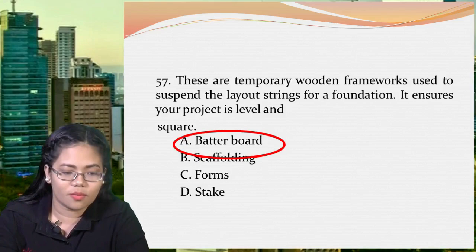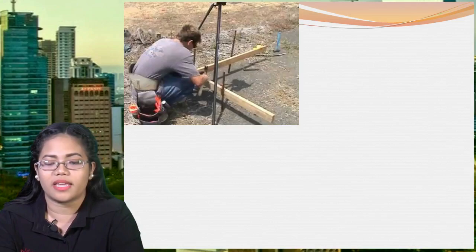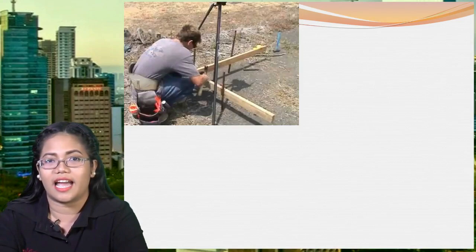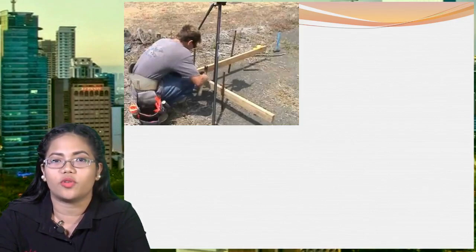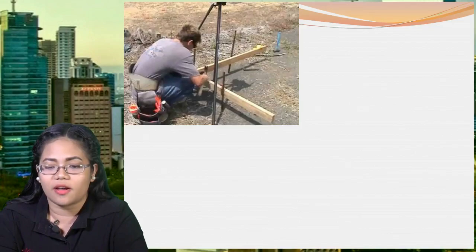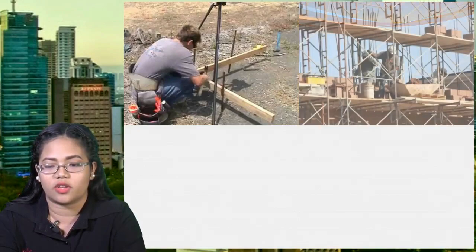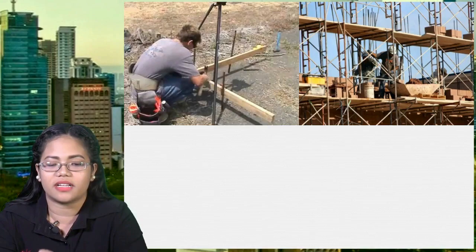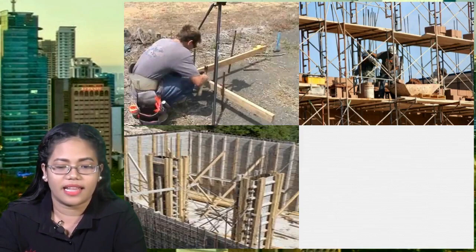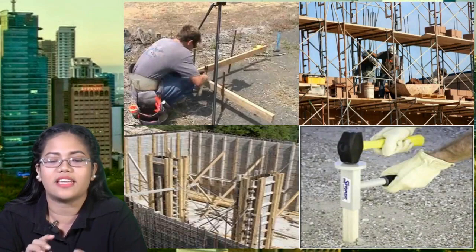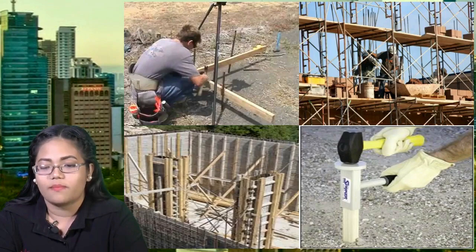Here is an example picture of butterboard — it has a right angle, and the post is placed at the corner part. Scaffolding, by contrast, is a temporary structure used to support a work crew — those platforms construction workers stand on at condominiums and houses, made of steel. Forms are rectangular posts filled with mortar inside, which eventually become the posts or foundation of houses and buildings. Stakes are large nail-like objects driven into the ground as reference points for construction workers and engineers.